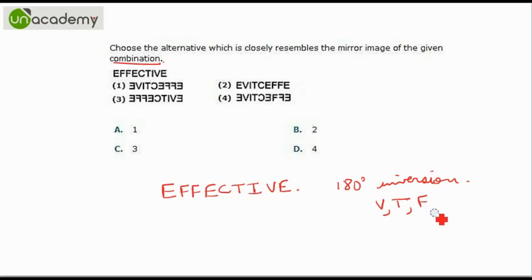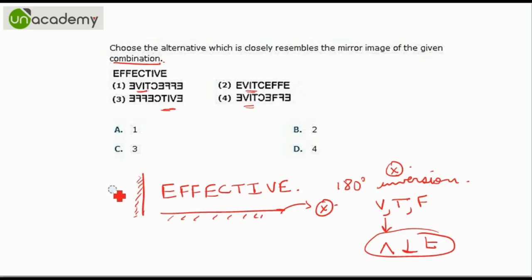So V, T and F on 180 degree inversion will look like this. Let us first check if they are in the options. On a quick look, you will see that they are not in the option. So 180 degree inversion is incorrect. The mirror is not here. So we see that in most of these options, the V, T is coming on the left. So we again have the mirror on the left.